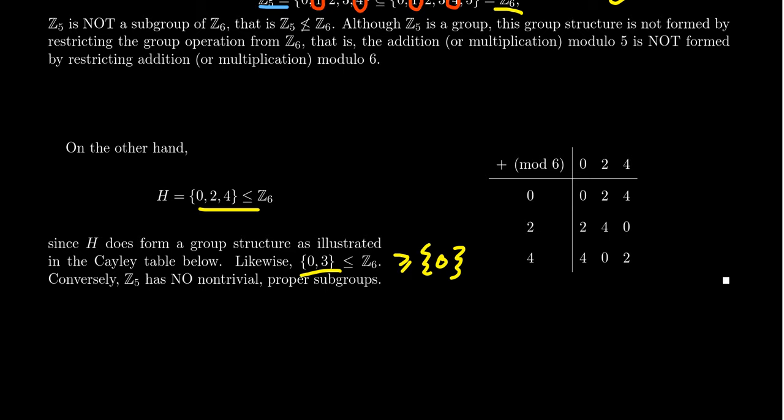The important thing, though, is Z5 cannot be made into a subgroup. Even if you change the operation, even if you don't use addition mod 5 anymore, if you switch to addition mod 6, you cannot get a subgroup structure out of Z5. Because basically, they have the following problem. You're going to have 4 plus 1, which is equal to 5 mod 6. But 5 is not inside of this set Z5. So we can't make Z5 into a subgroup of Z6. There's some type of restriction there.